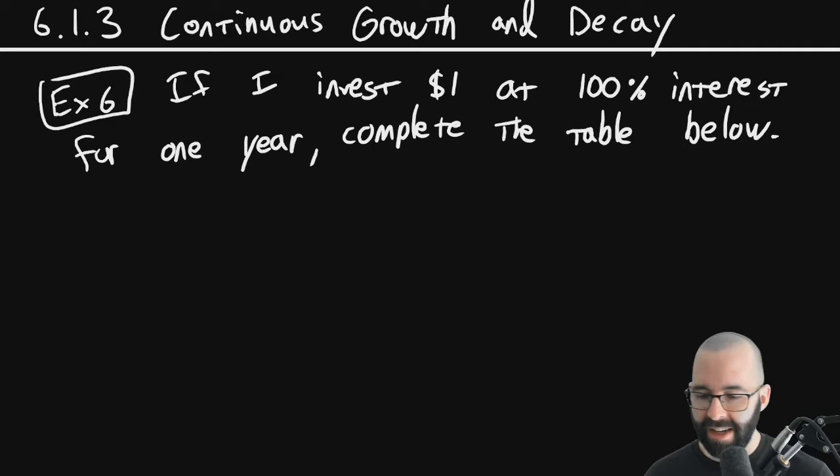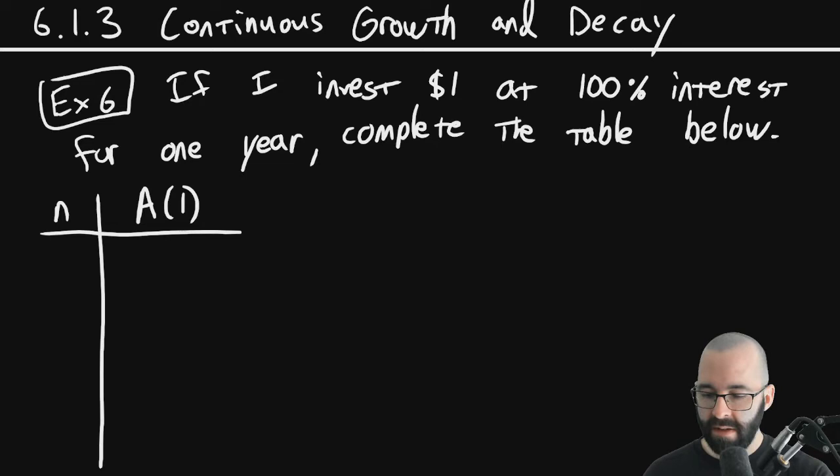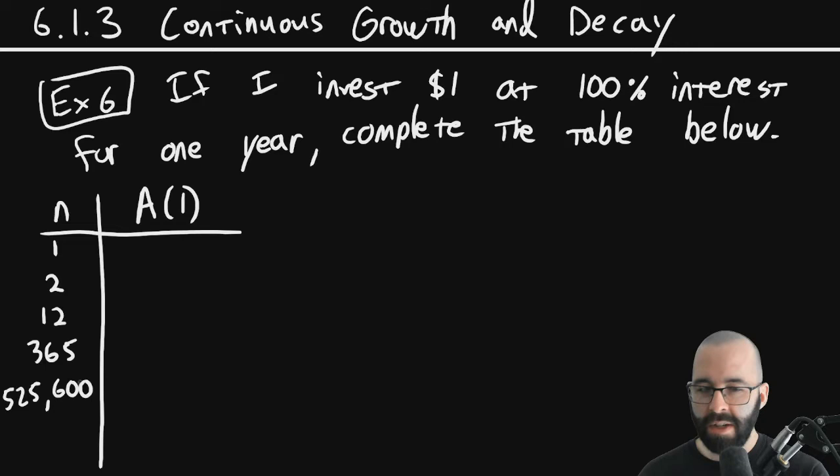This table is going to say, what's my amount in my account after a single year for various n? Maybe 1, 2, 12, 365, 525,600 minutes. If you don't get the reference, that's fine. So we're just going to complete this table.